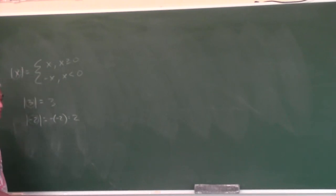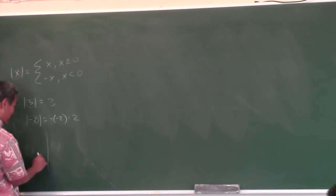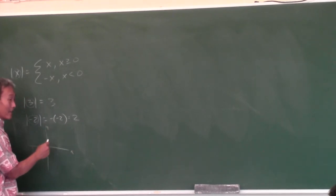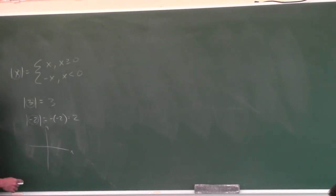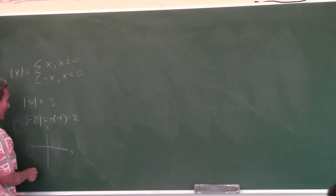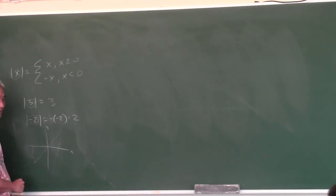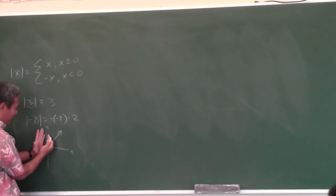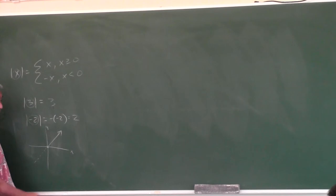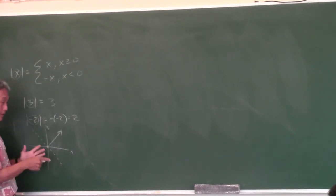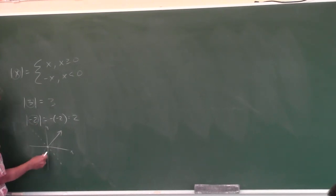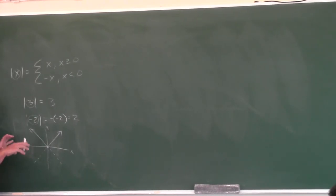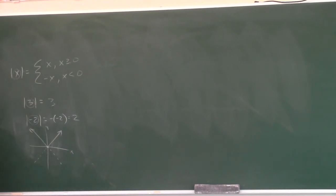You guys know what the graph of absolute value looks like, right? In Algebra 1 the graph is a V, but you have to know why it's a V. What does y equals x look like? You only graph it when x is greater than or equal to zero — to the right of the y-axis. What does y equals negative x look like? You only graph it when x is less than zero — to the left of the y-axis. That's why you get this V graph.